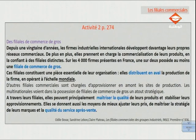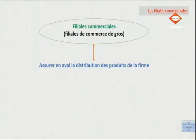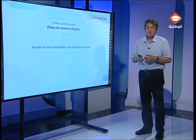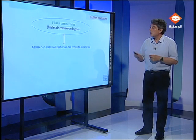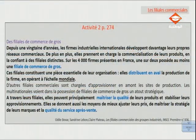Il est clair d'après ce texte qu'on est ici dans une stratégie de distribution. Ces filiales de commerce de gros distribuent en aval la production de la firme en opérant à l'échelle mondiale. Elles constituent une pièce essentielle de leur organisation. À travers leurs filiales, ces firmes peuvent principalement maîtriser la qualité de leurs produits et stabiliser leurs approvisionnements, mais aussi mieux ajuster leurs prix, maîtriser la stratégie de leurs marques et la qualité du service après-vente.